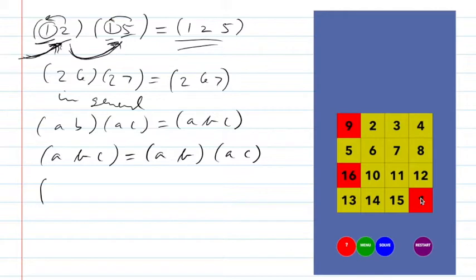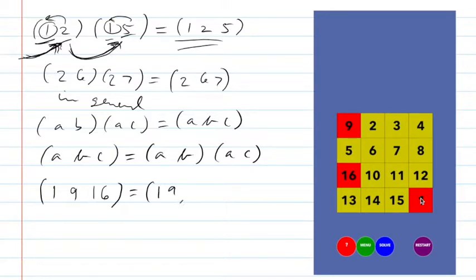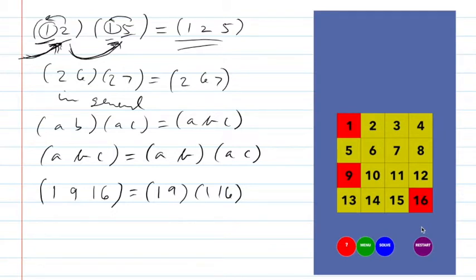So what we want to do is apply the permutation that sends the thing in position one to position nine, position nine to position 16, and position 16 to position one — that's the three-cycle (1, 9, 16). Working backwards, we can factor this as (1, 9)(1, 16). I go ahead and do (1, 9) then (1, 16), and as you can see, it has accomplished that and completed the puzzle.